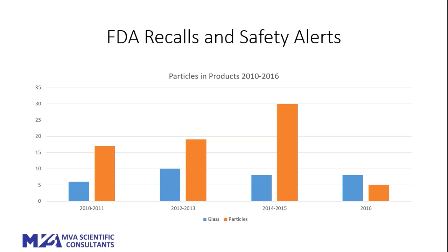Our next slide shows overall safety alerts and FDA recalls from not only glass particulate but general particulate in products over the past five and a half years, from 2010 to about April of 2016. The number of incidents hit a higher concentration in 2012 and in 2014-2015 it dropped a little bit. In 2016 it appears approximately equivalent to the two previous years and seems to be on the rise for this year.